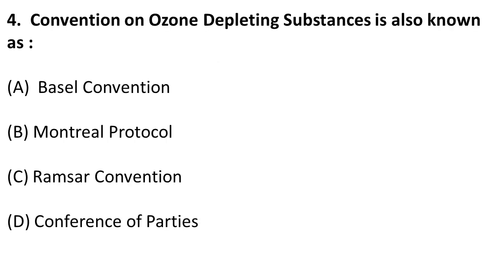The next question is: the convention on ozone depleting substances is known as what? In 1987, the Montreal Protocol was formed for ozone depleting substances (ODS). Remember: ODS → Montreal Protocol. It was finalized in 1987.